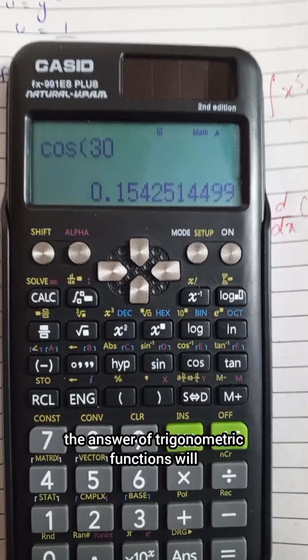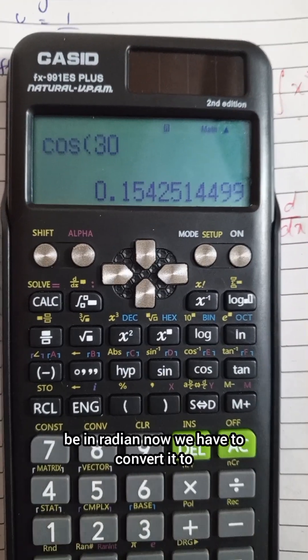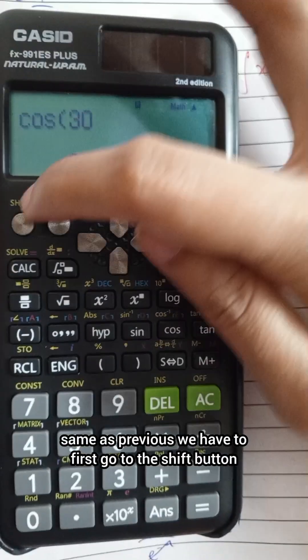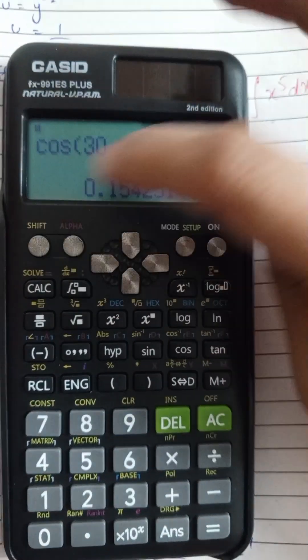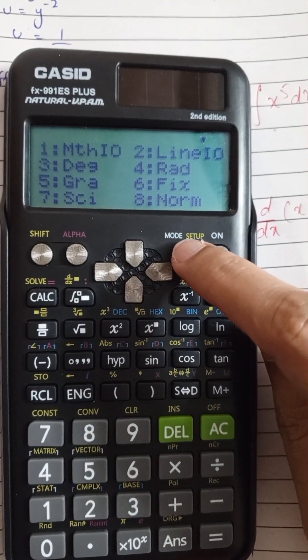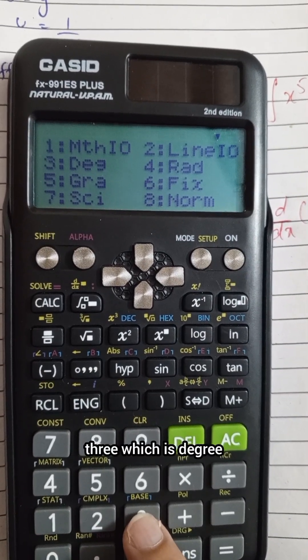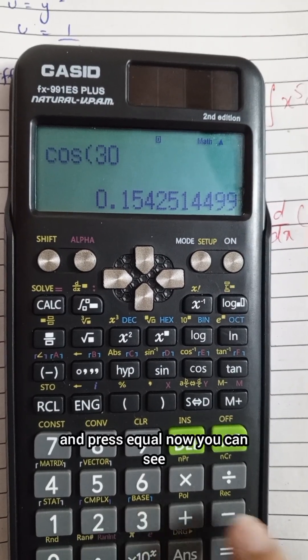Now we have to convert it back into degrees. Same as previous, we have to first go to the shift button, then press the setup button, then go to 3 which is degree, and press equal.